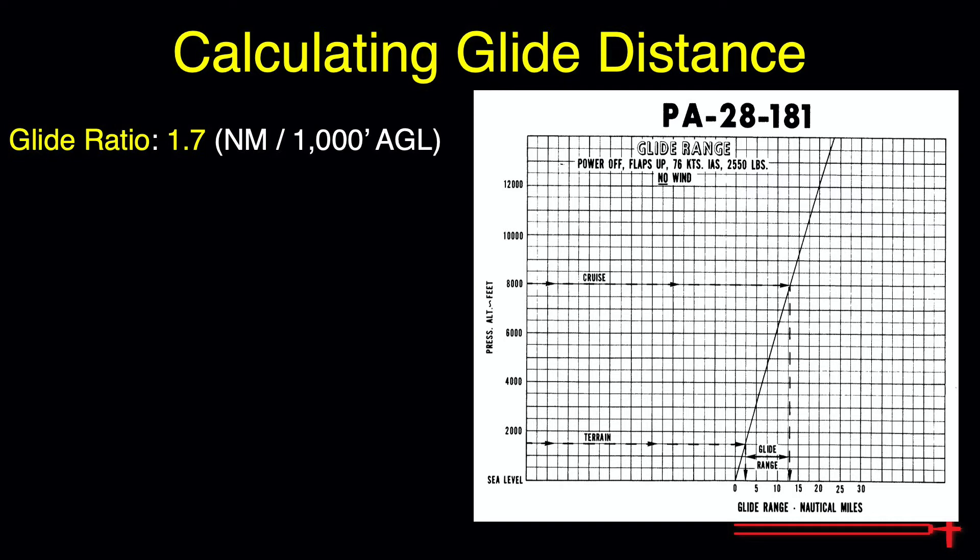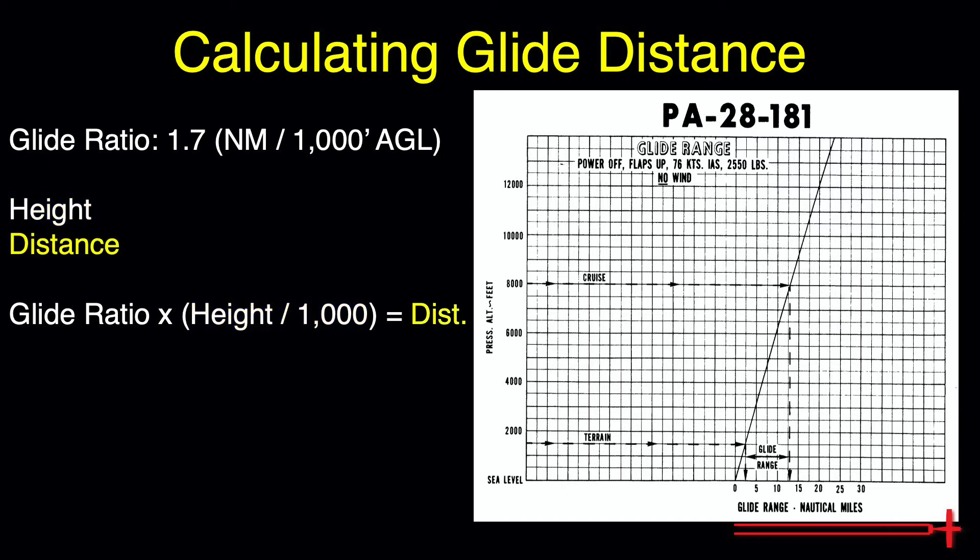Let's apply this glide ratio to our engine failure scenario from earlier using this easy to memorize equation. The sum of our glide ratio multiplied by our height above obstacles divided by a thousand leaves us with our expected glide distance.